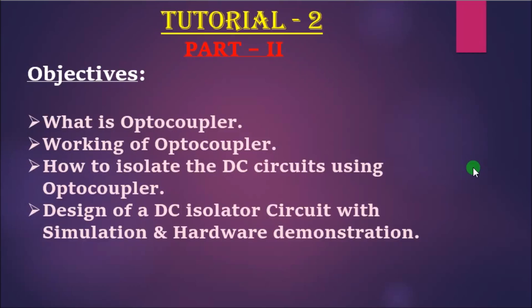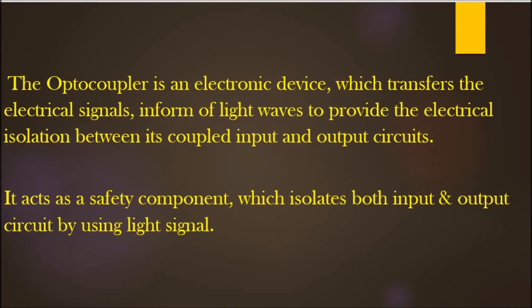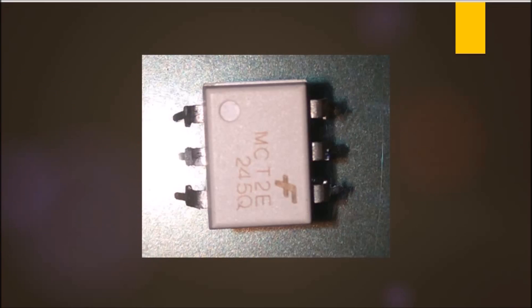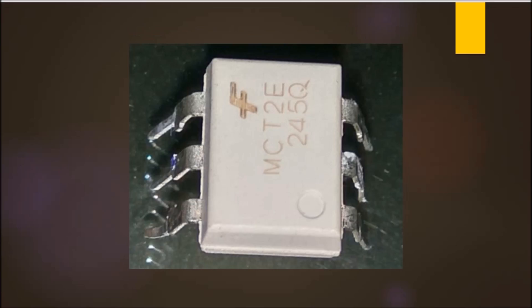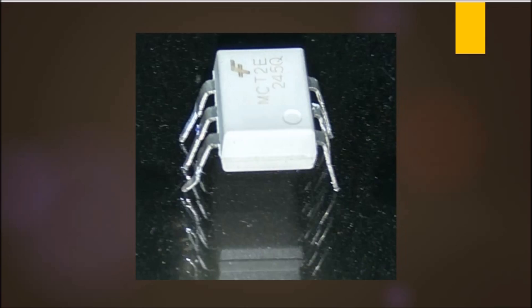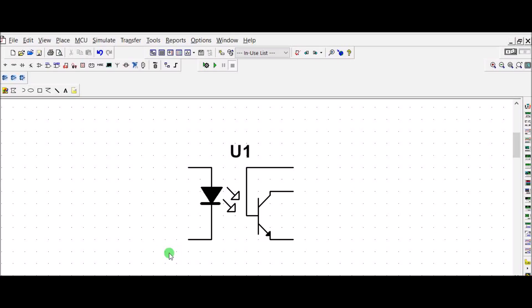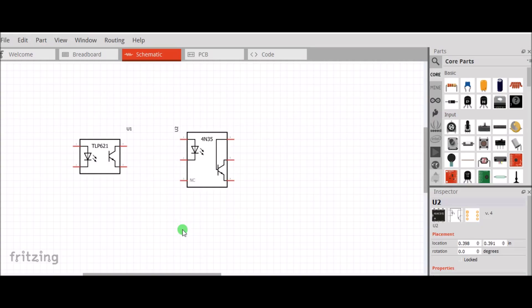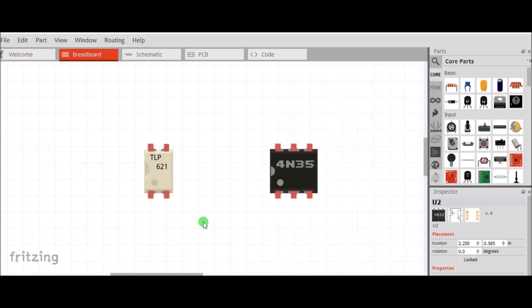The design of a DC isolator circuit with simulation and hardware demonstration. The optocoupler is an electronic device which transfers electrical signals in the form of light waves to provide electrical isolation between its coupled input and output circuits. That means it acts as a safety component which isolates both input and output circuits by using light signals.